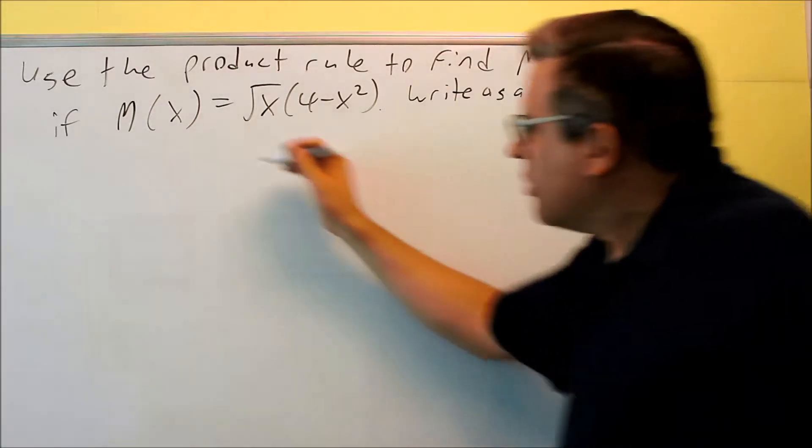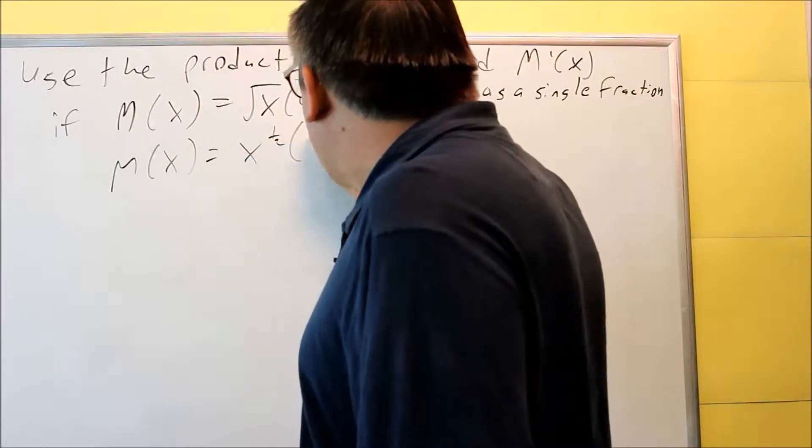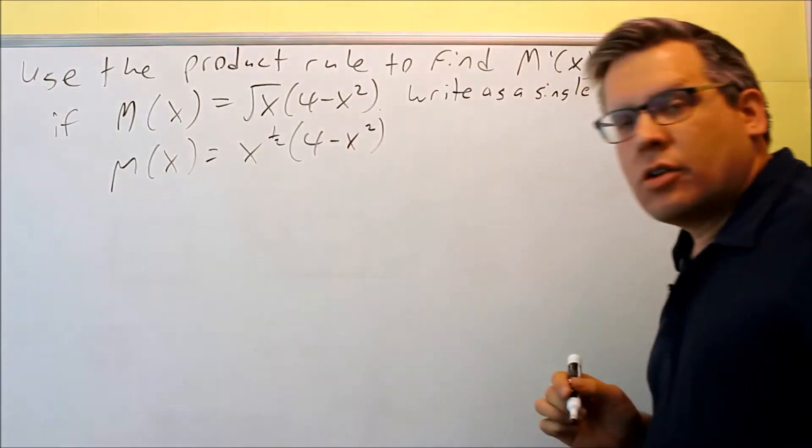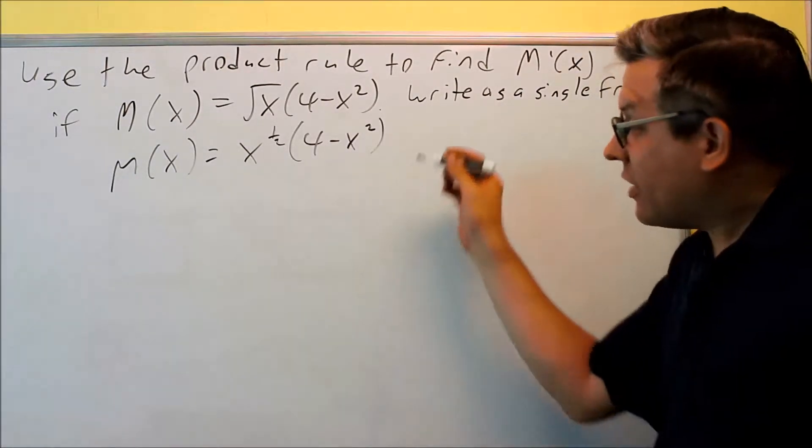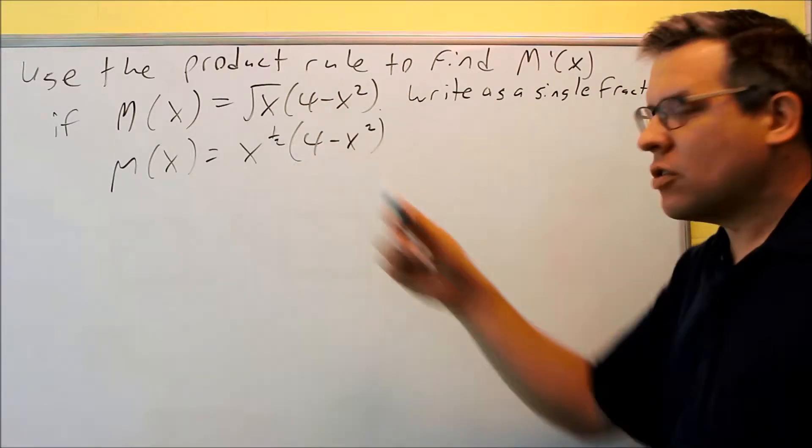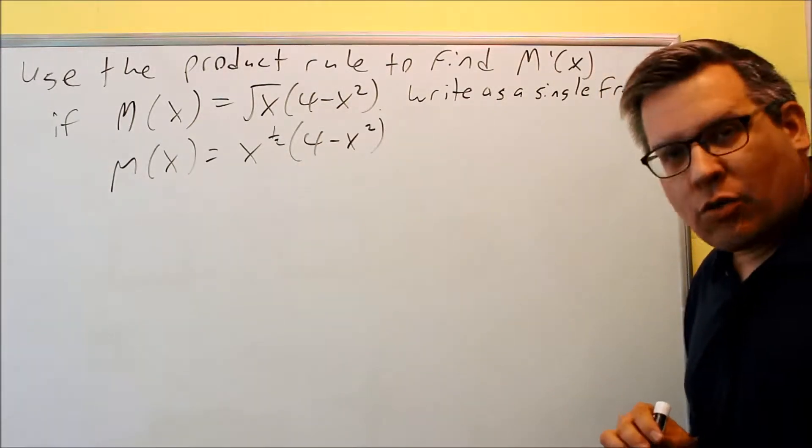Now before I jump into it, let's go ahead and change this into a one-half power because we'll have to be applying the power rules as we go through, so I'm going to change the square root of x into x to the one-half. So it'll be a power rule combined with the product rule.